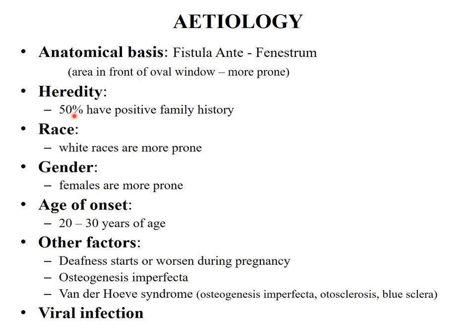Heredity: 50% of cases have a positive family history; the rest are sporadic. Genetic studies reveal it is an autosomal dominant trait with incomplete penetrance and variable expressivity. White races are more prone to otosclerosis. In terms of gender, females are more prone. The age of onset is from 20 to 30 years of age, and it is rare before 10 and after 40 years.